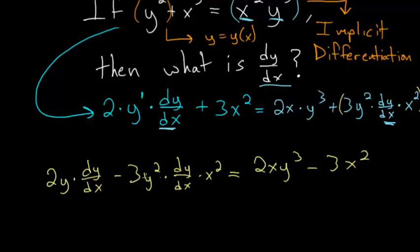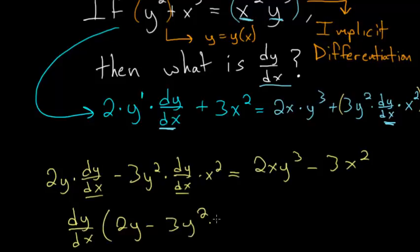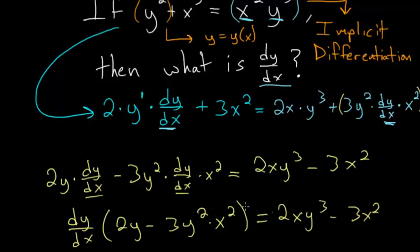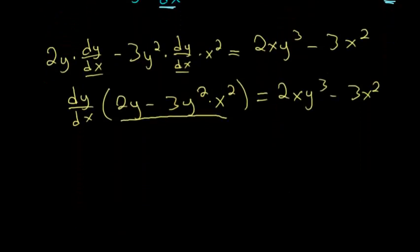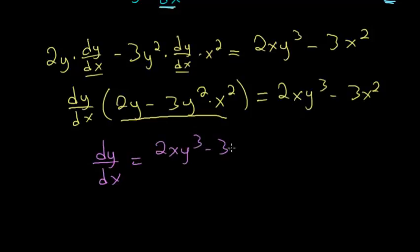Now that we have dy/dx on the same side, we can factor it out from each of these terms. So we have dy over dx multiplied by the quantity 2y minus 3y squared times x squared, and this equals 2xy cubed minus 3x squared. Then we divide each side by that expression, giving us our final answer: dy over dx equals 2xy to the third minus 3x squared, all divided by 2y minus 3y squared times x squared.